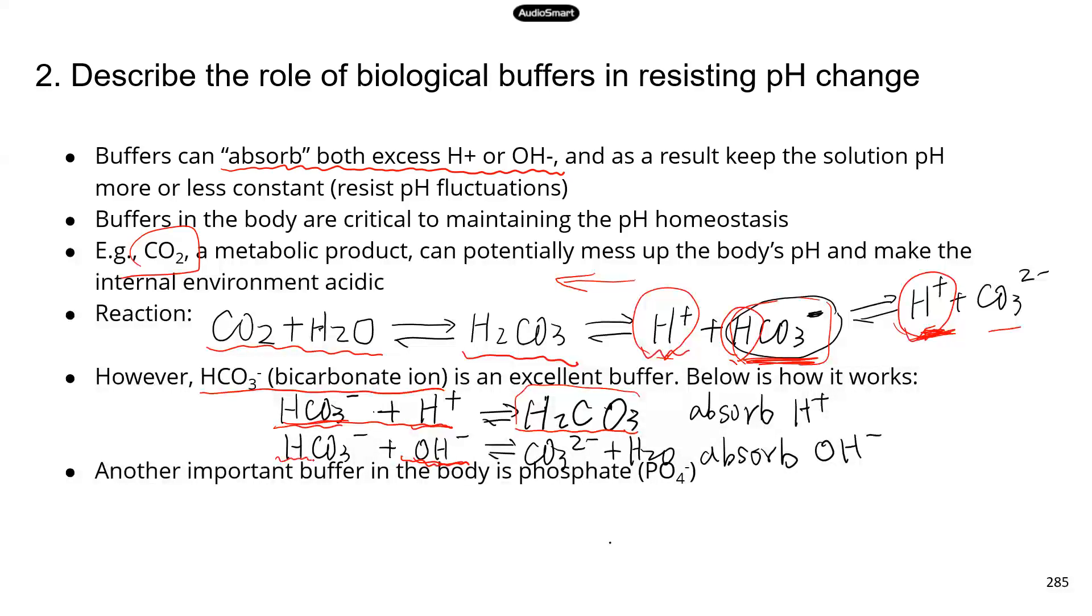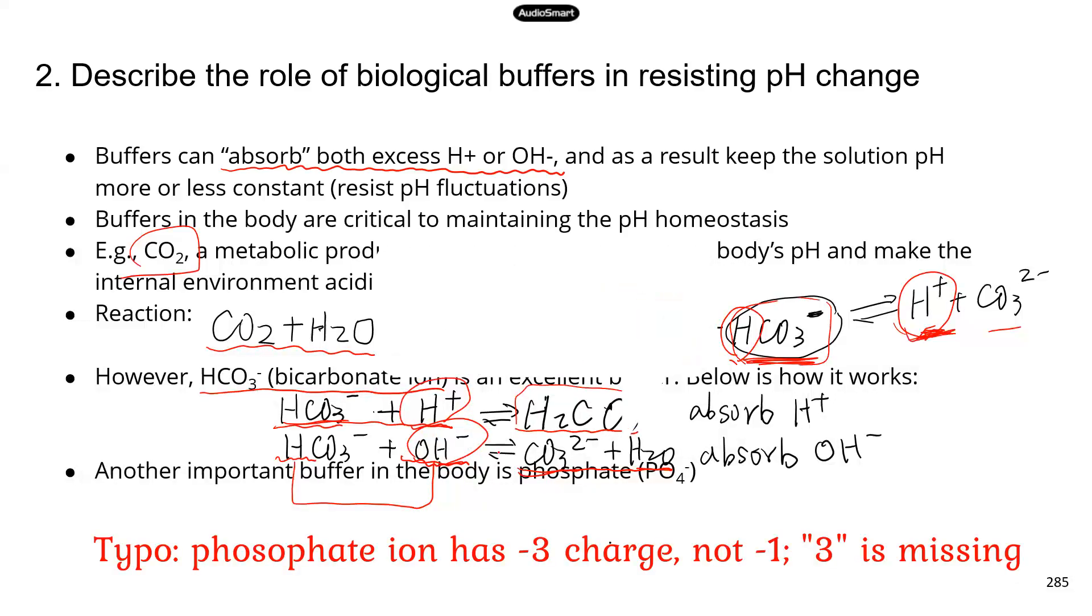So you can see bicarbonate ion can reduce that acidity. Now, on the other hand, there's a hydrogen right here in the bicarbonate ion. So these two can react. It basically just neutralizes each other. So you get carbonate ion and water, and that's also neutral. So if there's too much hydrogen ion or hydroxide ion, then bicarbonate can react with either one, and then kind of absorb that change from too much acidity or too much alkalinity. There is another important buffer in our body, and that's phosphate. So that's PO4.